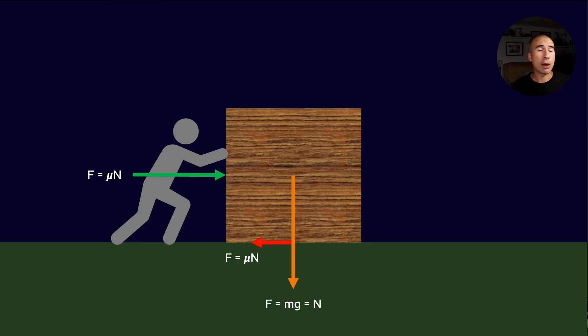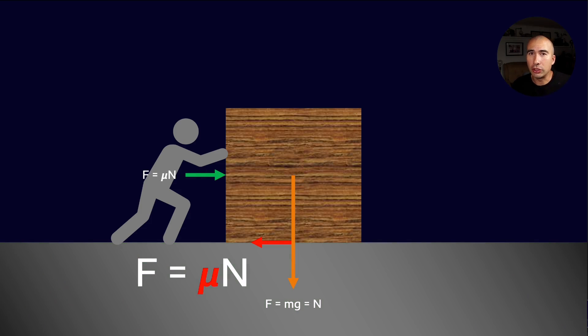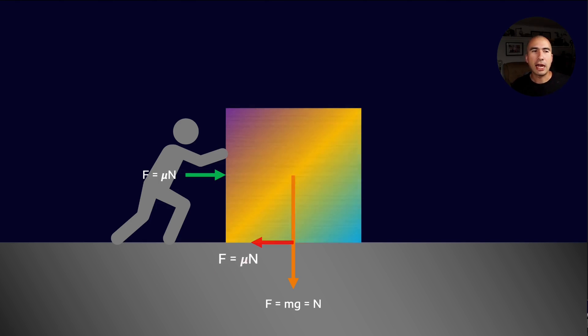It's mass times gravity. And without changing the weight of the block, the only thing that we can do fundamentally is to change the coefficient of friction. As a result, I need to change something about the materials. If we have two actual surfaces that are in contact with each other, all I can do is change the surface materials. But we have other tricks up our sleeve.